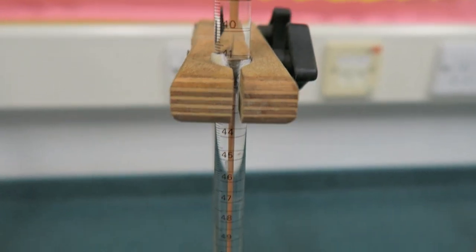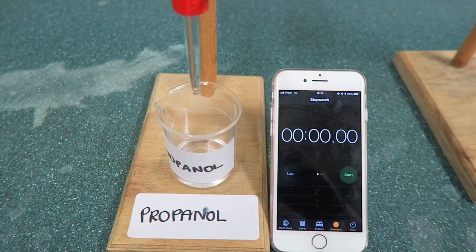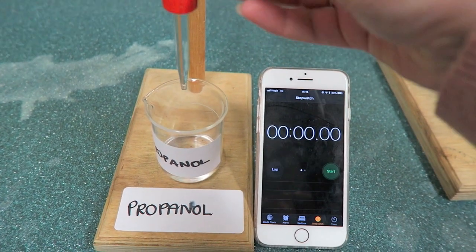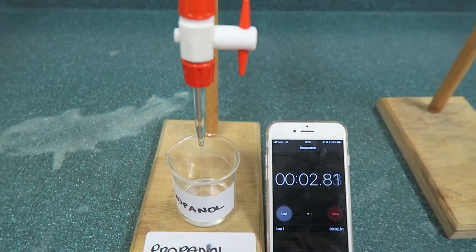A second burette was filled to the 35 line but this time with propanol. The same experiment was repeated. The burette was opened and allowed to empty until the 50 line and was timed as to how long this took.